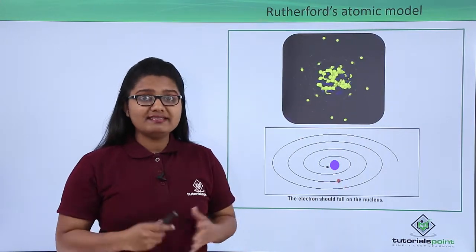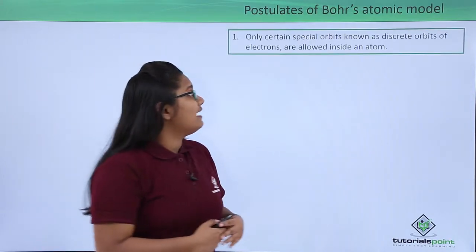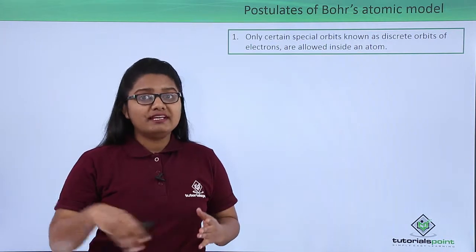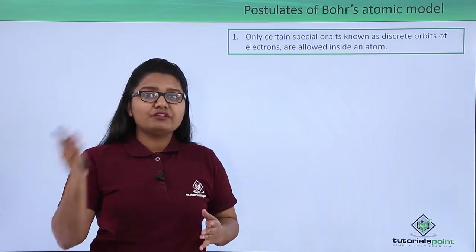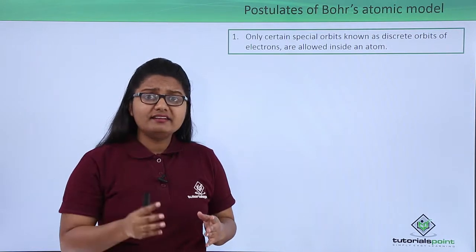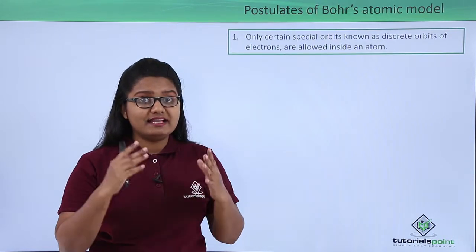So let us see what are the postulates of Bohr's atomic model. Bohr said that an electron cannot randomly choose an orbit to revolve around the nucleus. It has to take only certain special orbits which are allowed inside an atom.